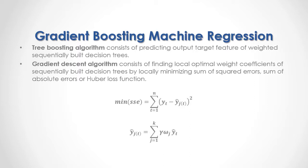Sequentially built decision trees weighted output target feature prediction sum is equal to the sum from the first to the last, where k is the number of sequentially built decision trees, multiplied by the learning rate regularization coefficient, multiplied by the local optimal sequentially built decision trees weight coefficient, multiplied by the sequentially built decision trees output target feature prediction.